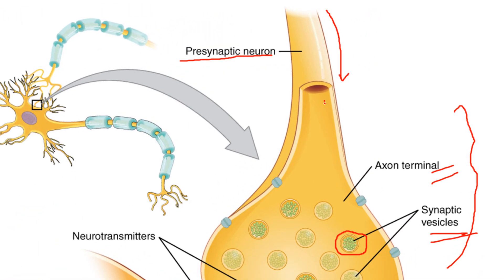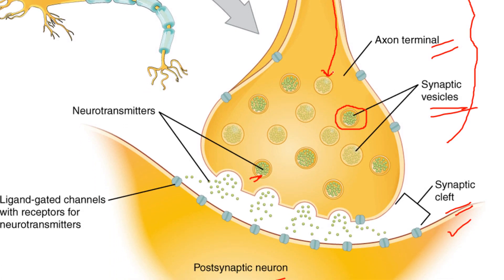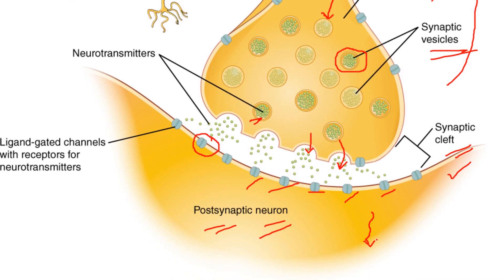When the action potential arrives, it causes the synaptic vesicles to depolarize and release the neurotransmitters into the synaptic cleft. These neurotransmitters are then received by receptors present on the dendrite of the post-synaptic neuron. Once received, the neurotransmitters bring about a new set of electrical impulses — this is how the information is passed from the pre-synaptic neuron to the post-synaptic neuron with the help of neurotransmitters.